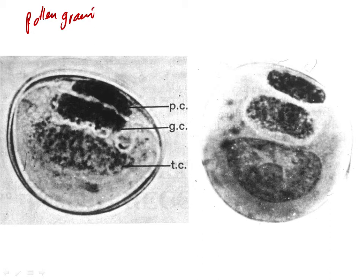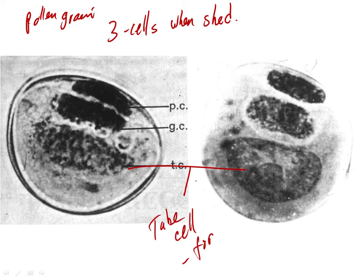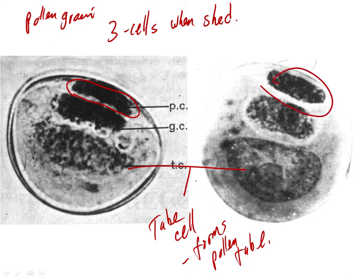We're going to look at the structure of the pollen grain a little more deeply. In this case there are three cells in the pollen grain when it's shed. The first one — the big one at the bottom — is called the tube cell, and that's going to form the pollen tube. The single cell at the upper end is the prothalial cell.